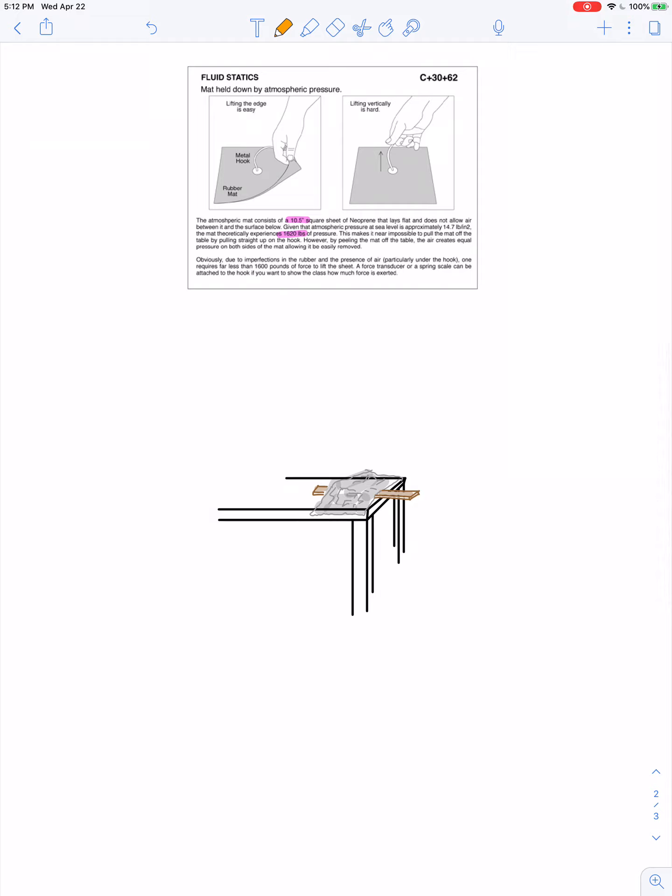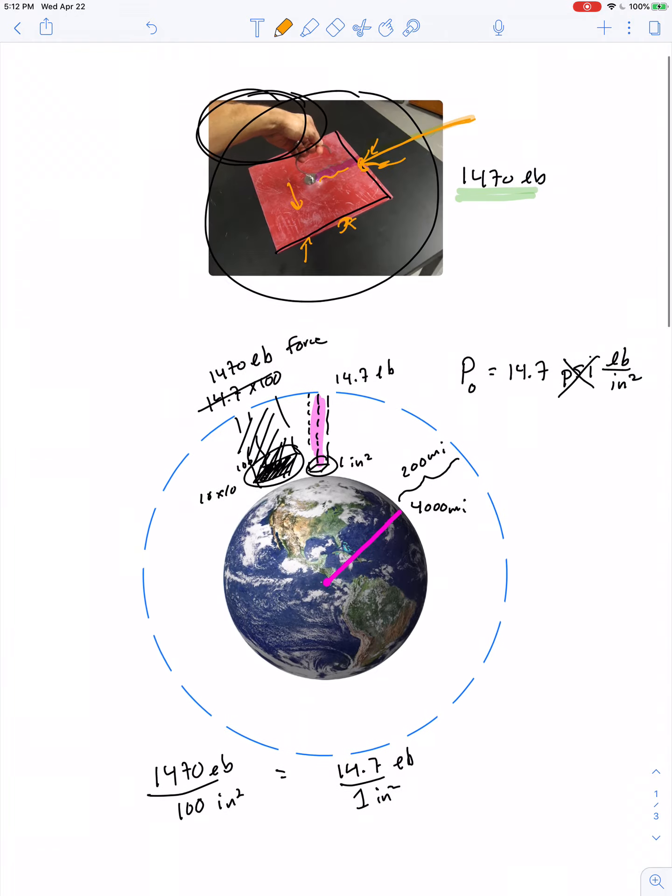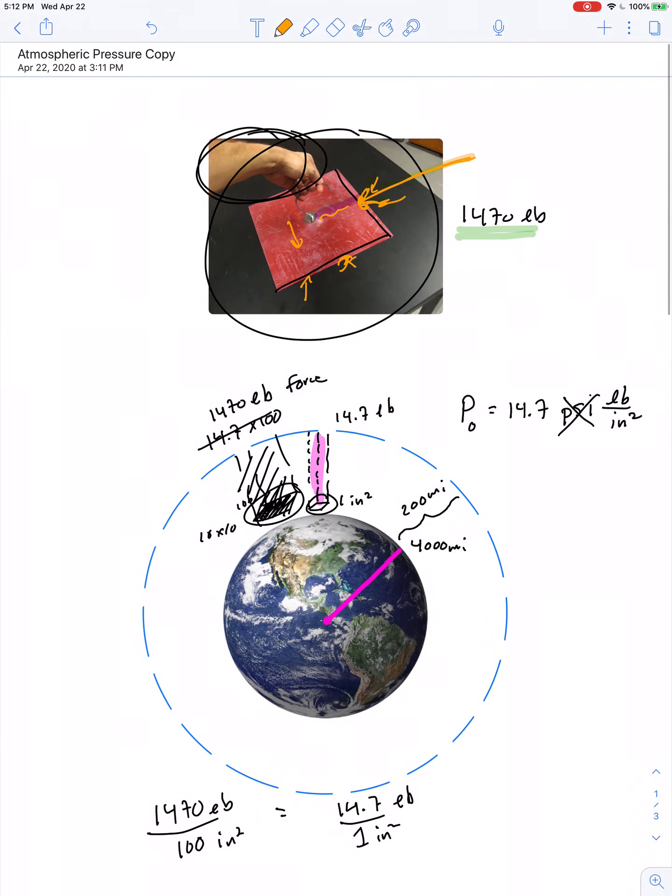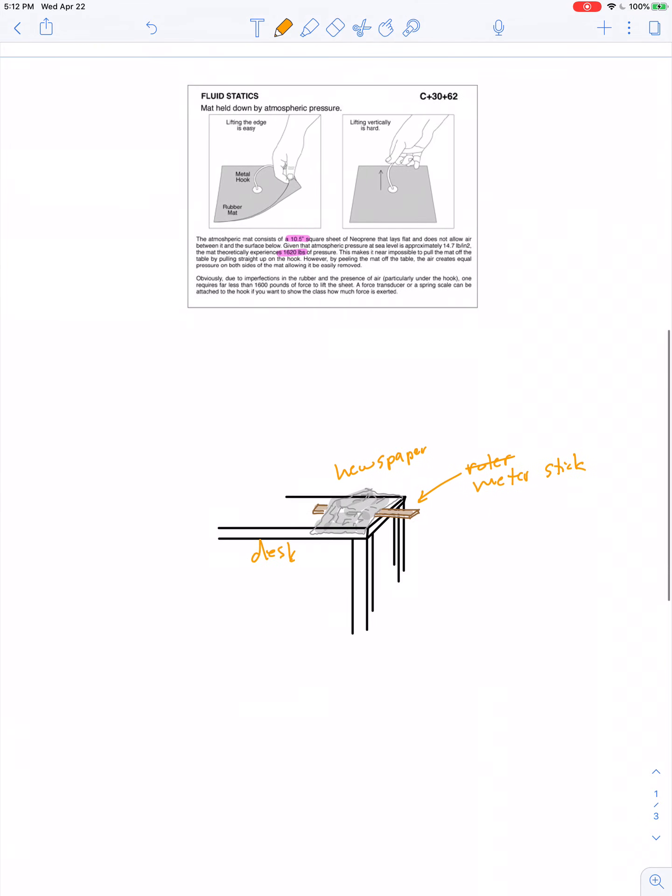Another version of this demonstration: put a ruler or meter stick or any long piece of wood, set it on the edge of a desk, then put a newspaper on top of it and lay the newspaper really flat. Just like the rubber sheet, try to avoid having any seams where air can get in underneath. Let the newspaper sit as flat as you can on the desk. Then with a quick karate chop type motion, push down with as much force as you can on this end of the meter stick.